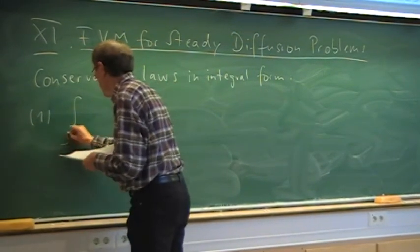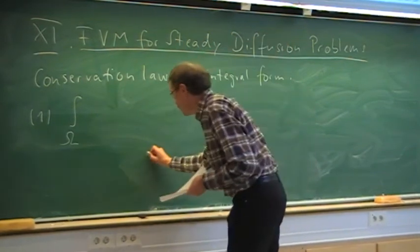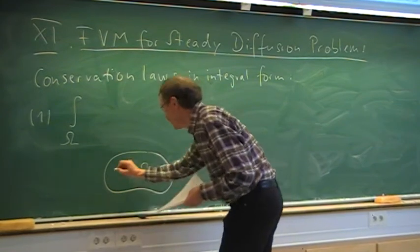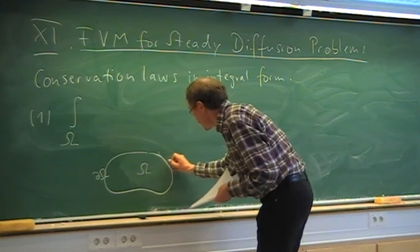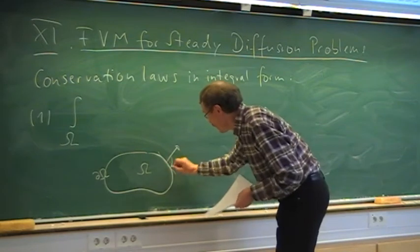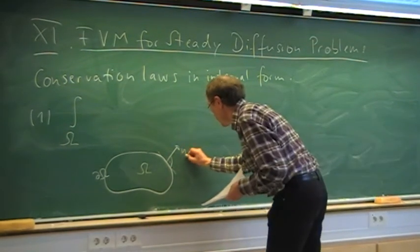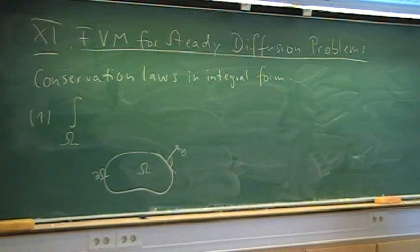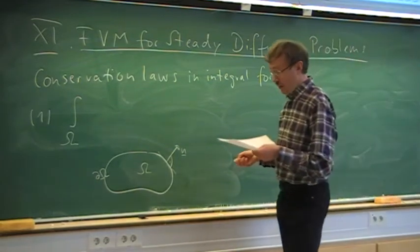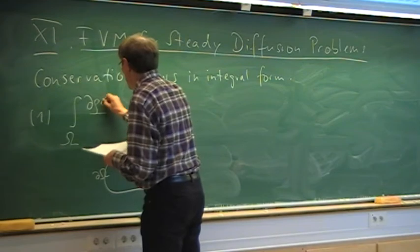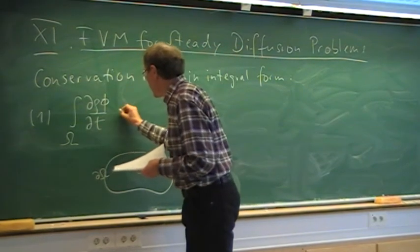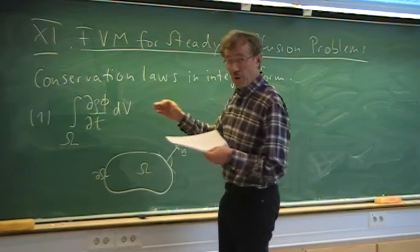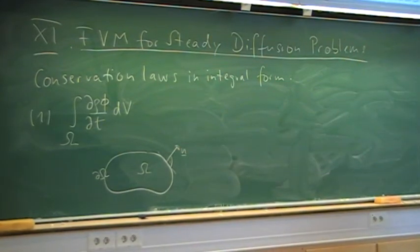The conservation laws can be written in the following form. We have a control volume omega with a boundary d-omega and an outer unit normal vector n. We have a time derivative of some property — this will be the rate of change of mass times phi in the control volume. A simple example is phi equal to 1, which gives the rate of change of mass itself, with d-rho/dt in the control volume omega.